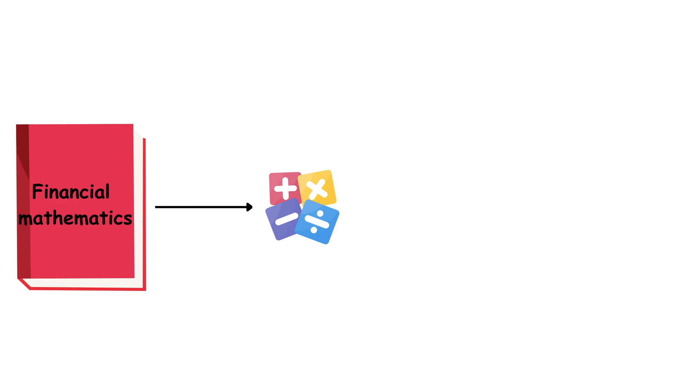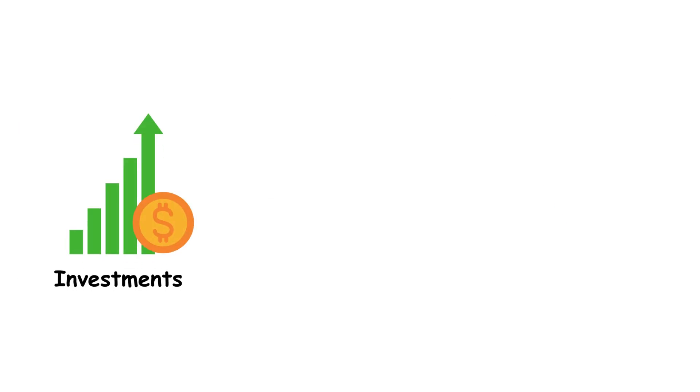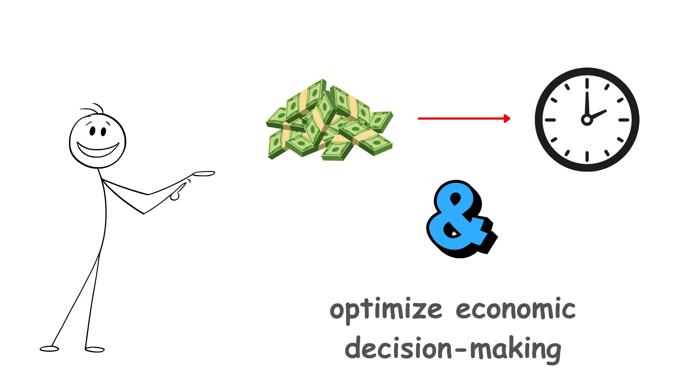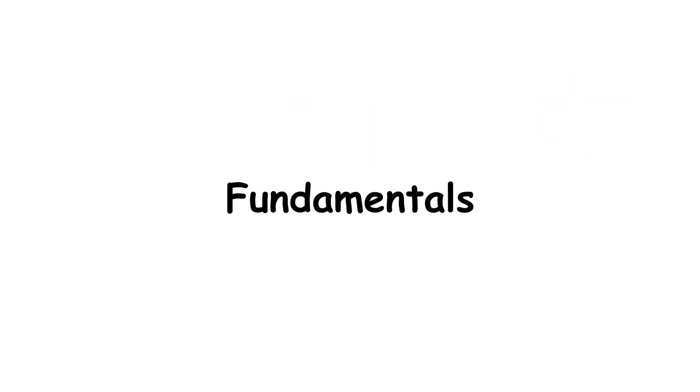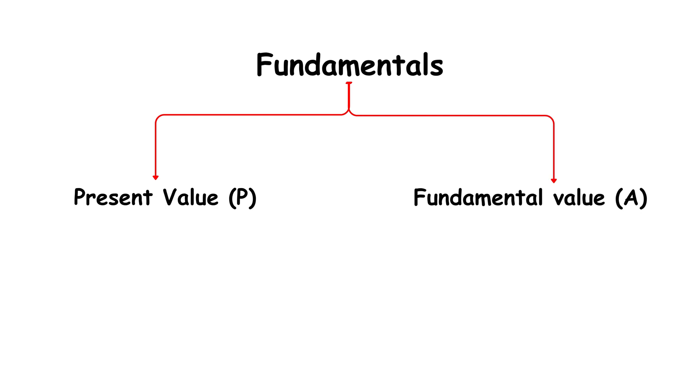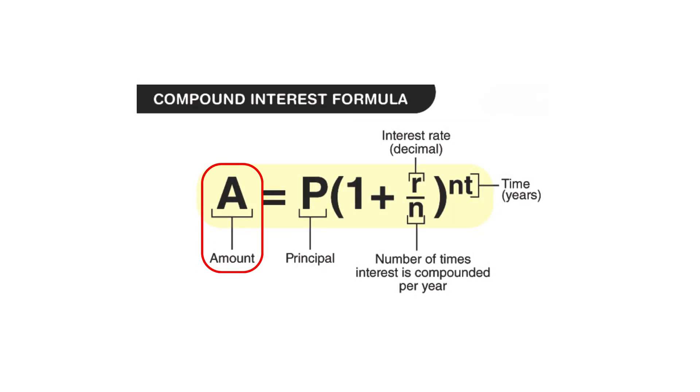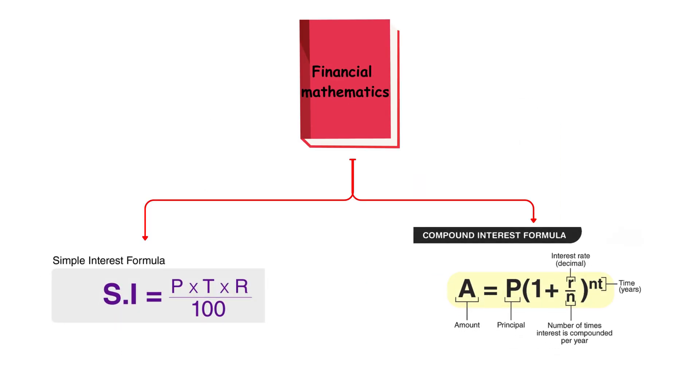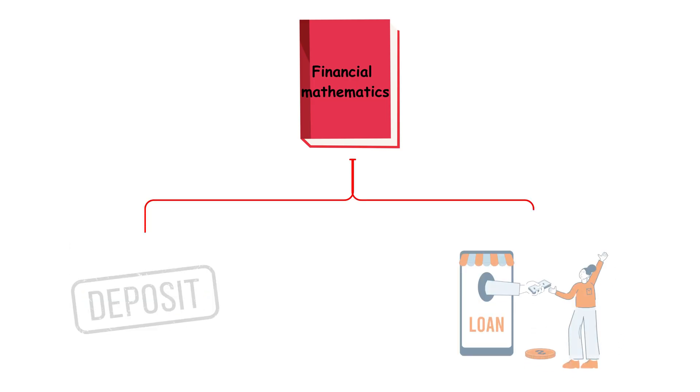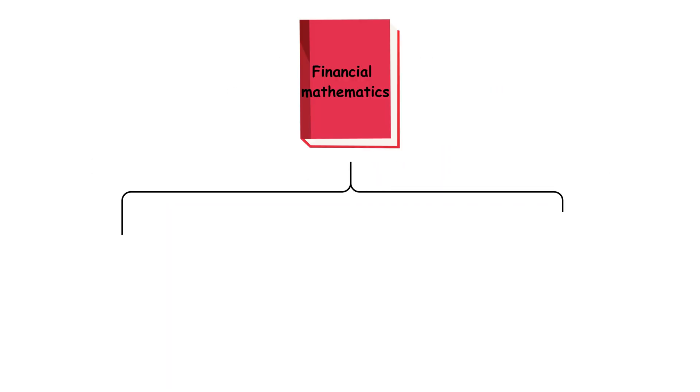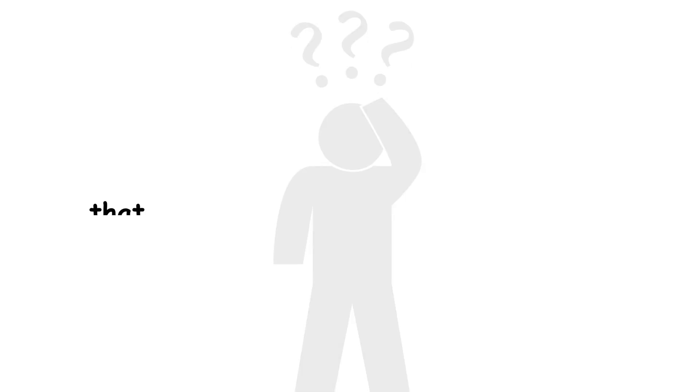Financial mathematics applies mathematical tools to model, analyze, and solve problems related to investments, loans, amortizations, annuities, and asset valuation. Its purpose is to quantify the value of money over time and optimize economic decision-making. Among its fundamentals are present value, or P, and fundamental value, or A, which relate current money to its equivalent at another point in time through interest rates, as in the compound interest formula, which calculates the accumulated amount after N periods at a rate R. As already noted, this field encompasses the study of simple and compound interest, commercial and rational discount, deposit and loan operations, as well as the capitalization and discounting of rents and annuities, including special cases such as perpetuities. It also develops methods for calculating the number of installments, or the implicit rate in periodic payments, and analyzes amortization systems that determine how debts are settled.